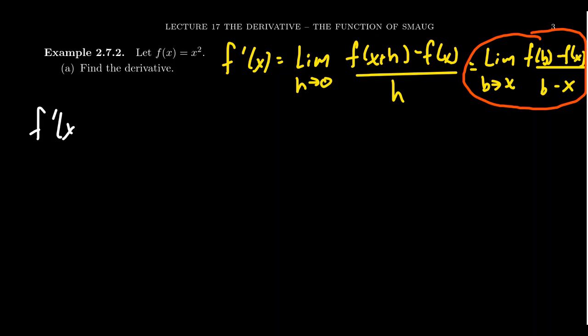So if we use the specific function f in this situation, our derivative f prime of x is going to look like the limit as b approaches x. We're going to get f of b, which is going to be b squared, minus f of x, which is x squared. And this sits above b minus x. So if we just plug in x equals b, we're going to get 0 over 0. Not much we can do with that, except for the hope that there is something better we can do.